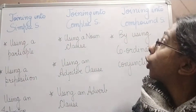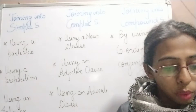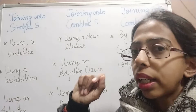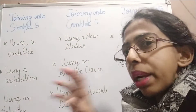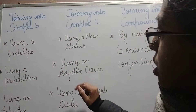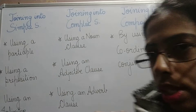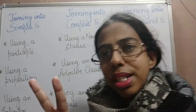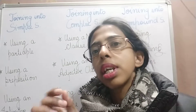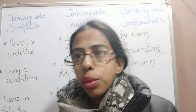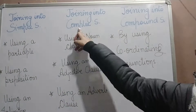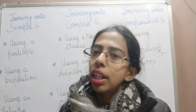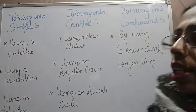Now, joining into complex sentences. When we have to join two simple sentences into a complex sentence, we can use a noun clause, an adjective clause, or an adverb clause. In easy language, when you have two simple sentences and you want to join them, you use a conjunction — specifically a subordinating conjunction for complex sentences.